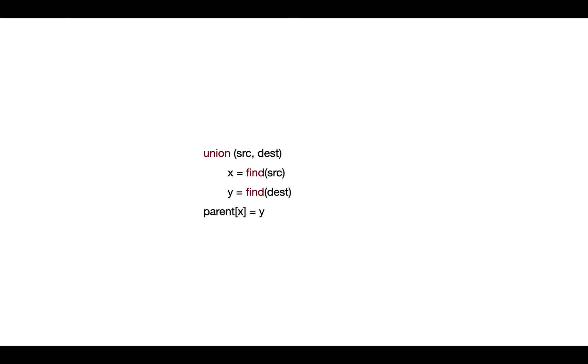Next is union. Union unites two vertices, right? So we set one of them as parent of the other vertex. So this is the naive approach: we get the parent of source and destination and unite them.